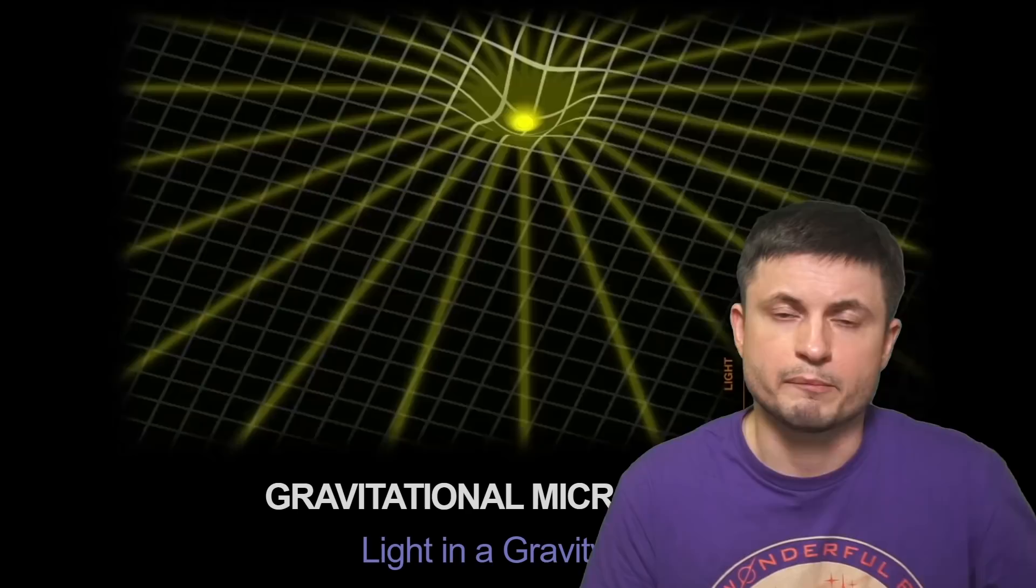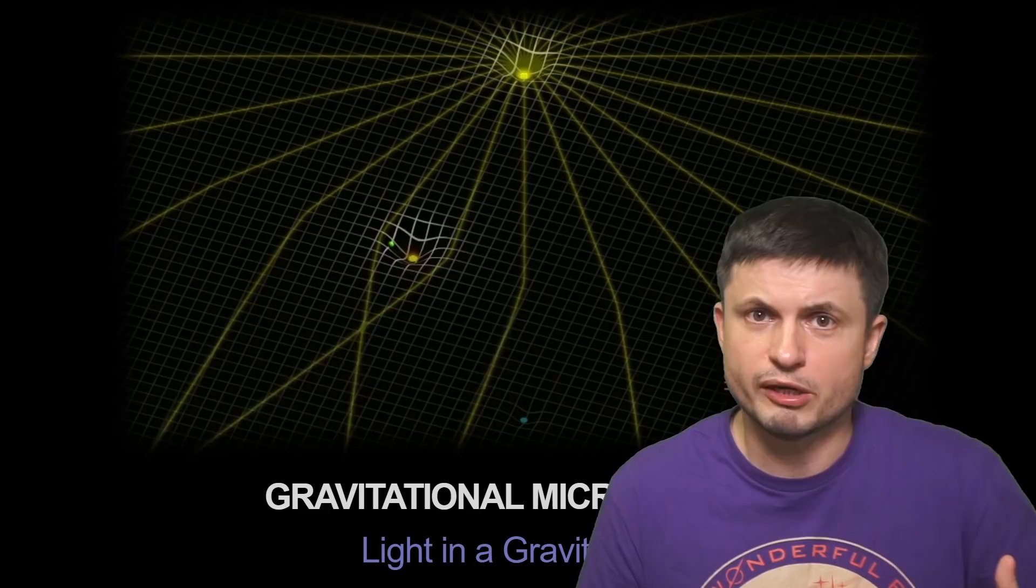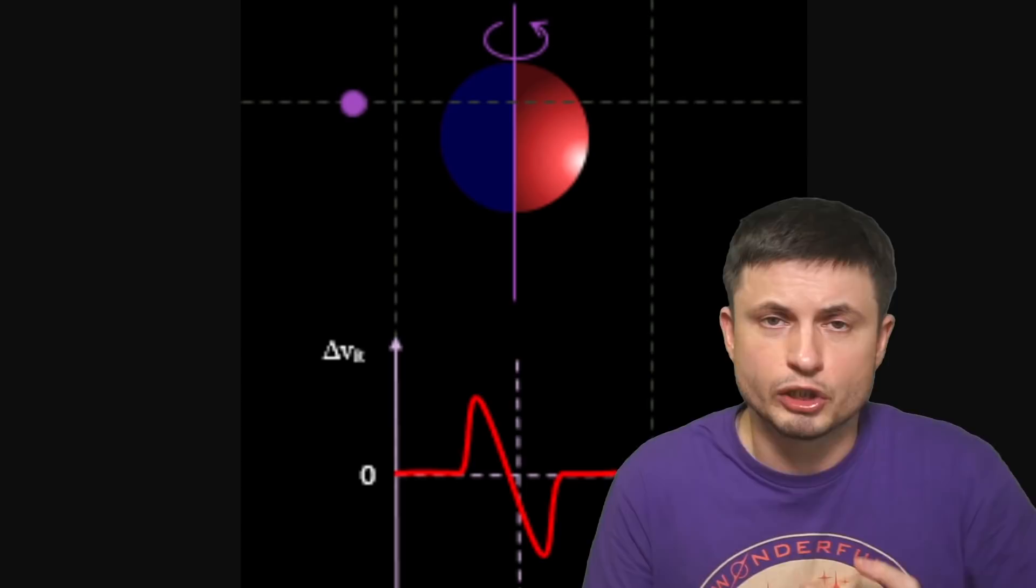And at least one object has been potentially discovered this way, but the primary object in this case was a brown dwarf. And so in this case, it's a satellite of a brown dwarf, not necessarily an exomoon.